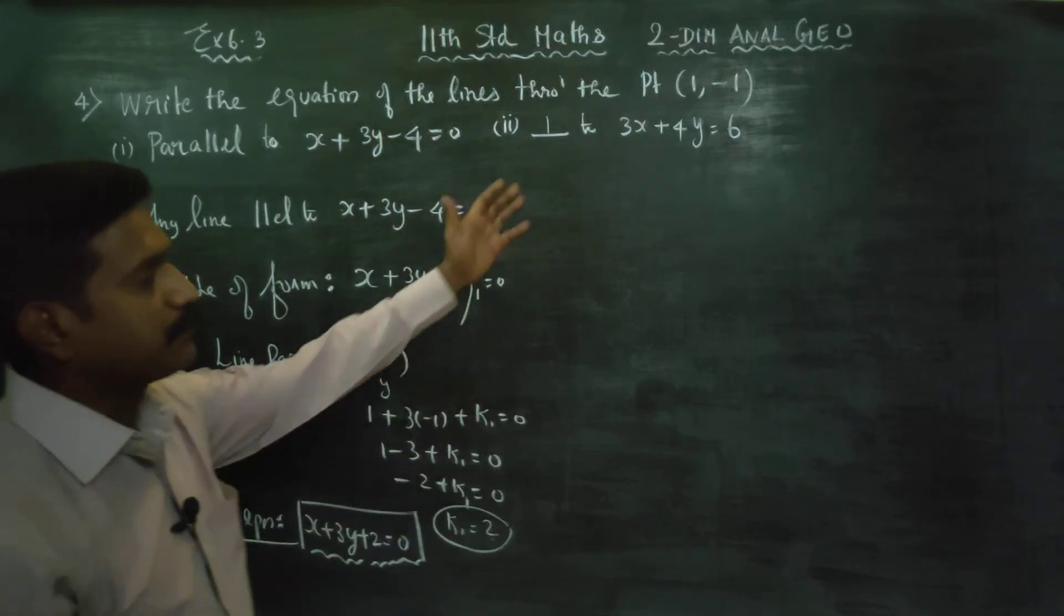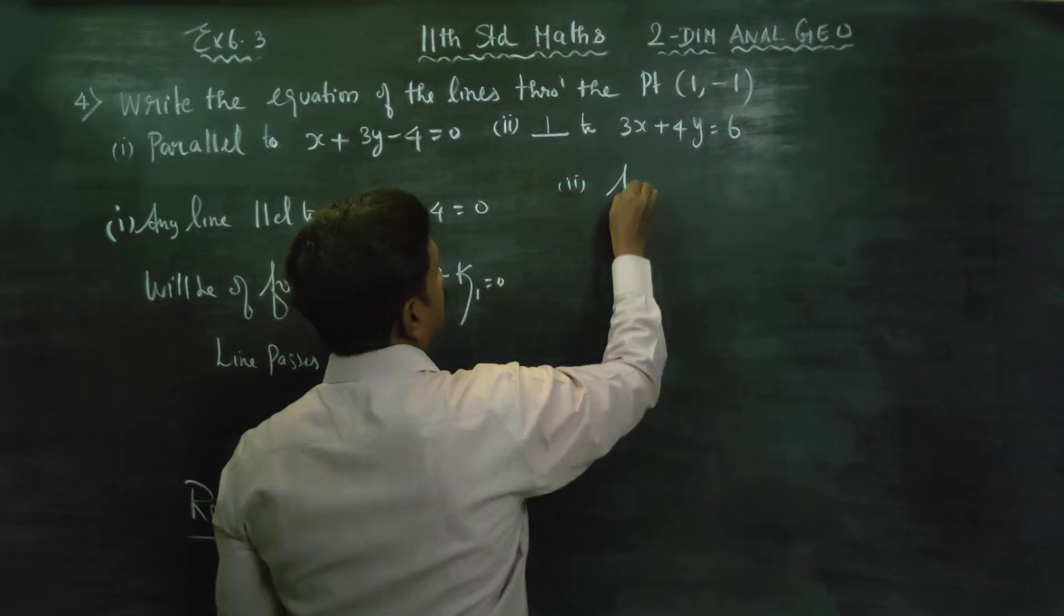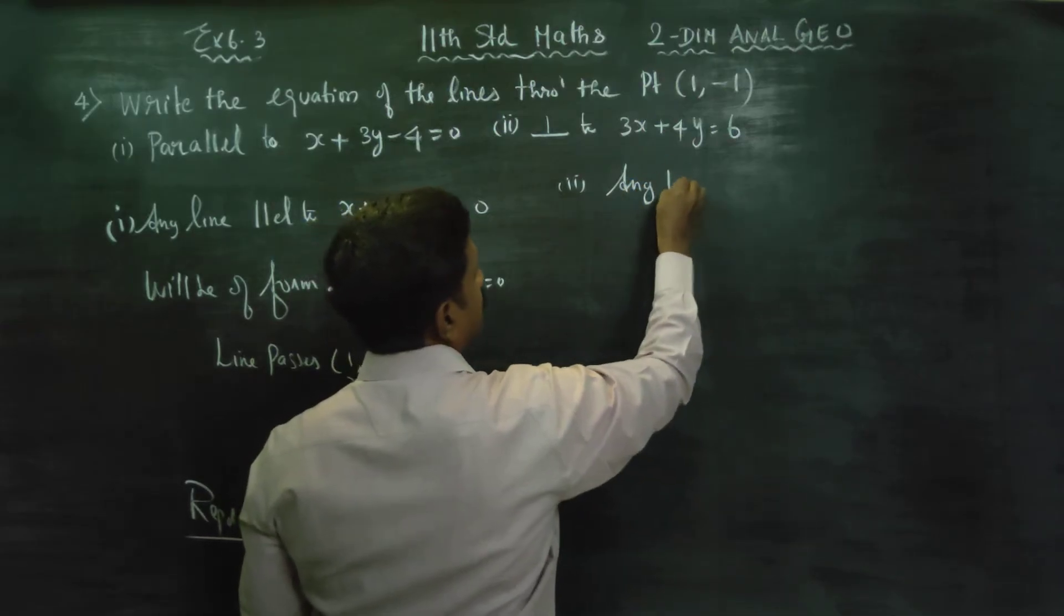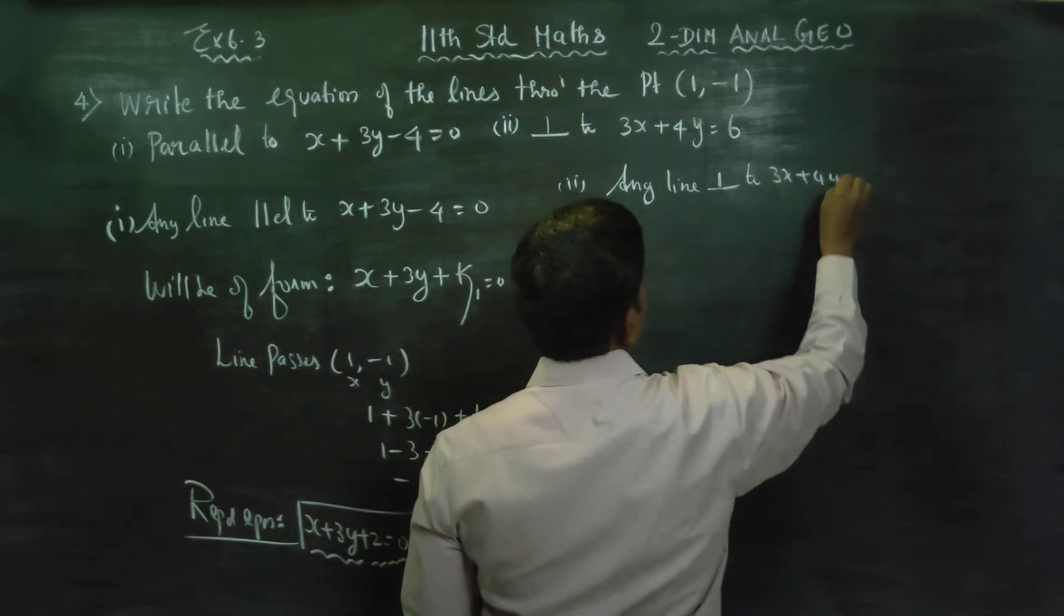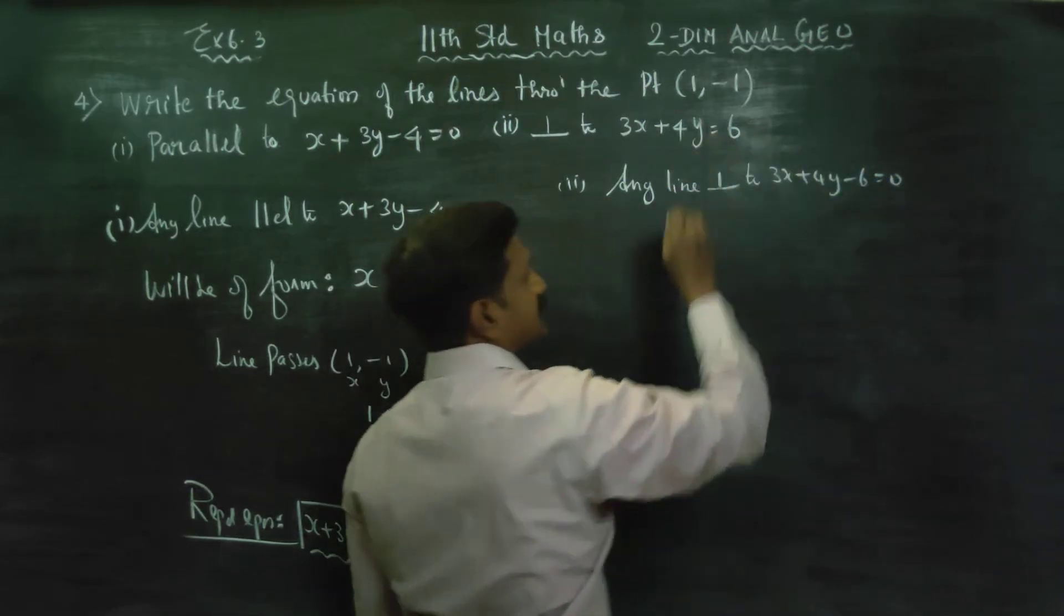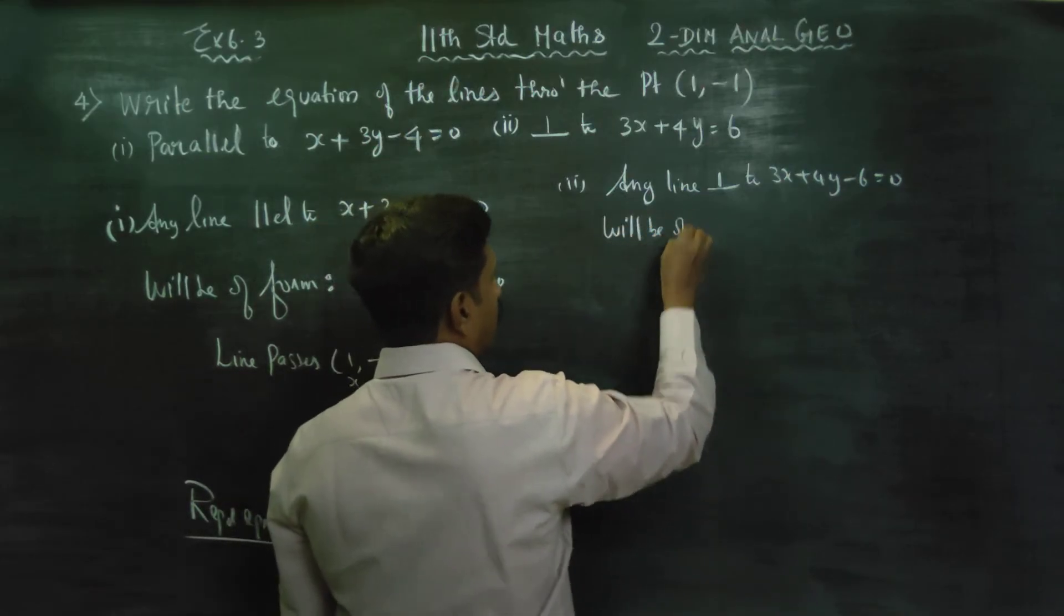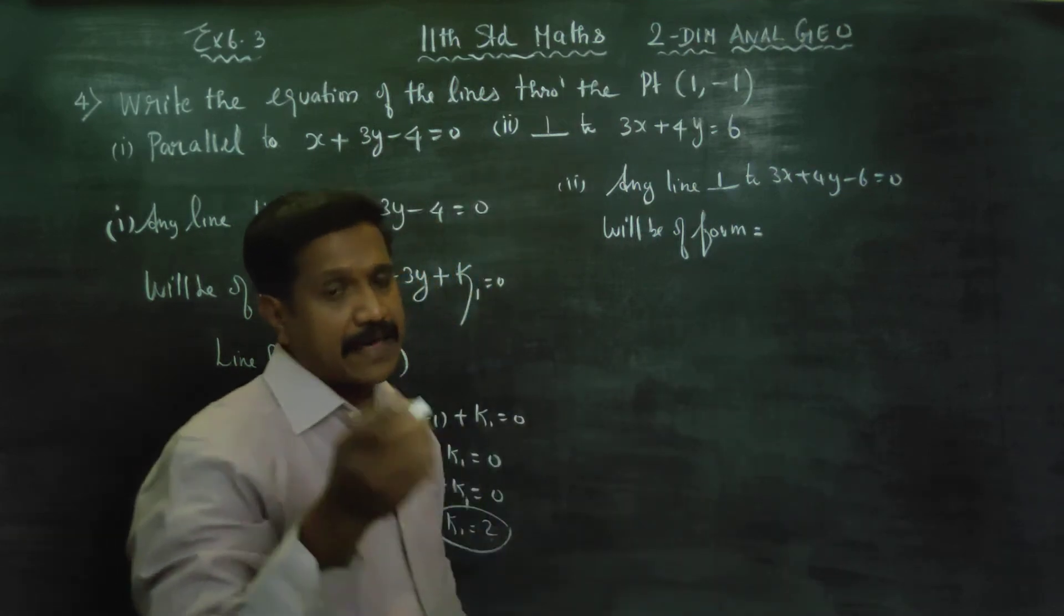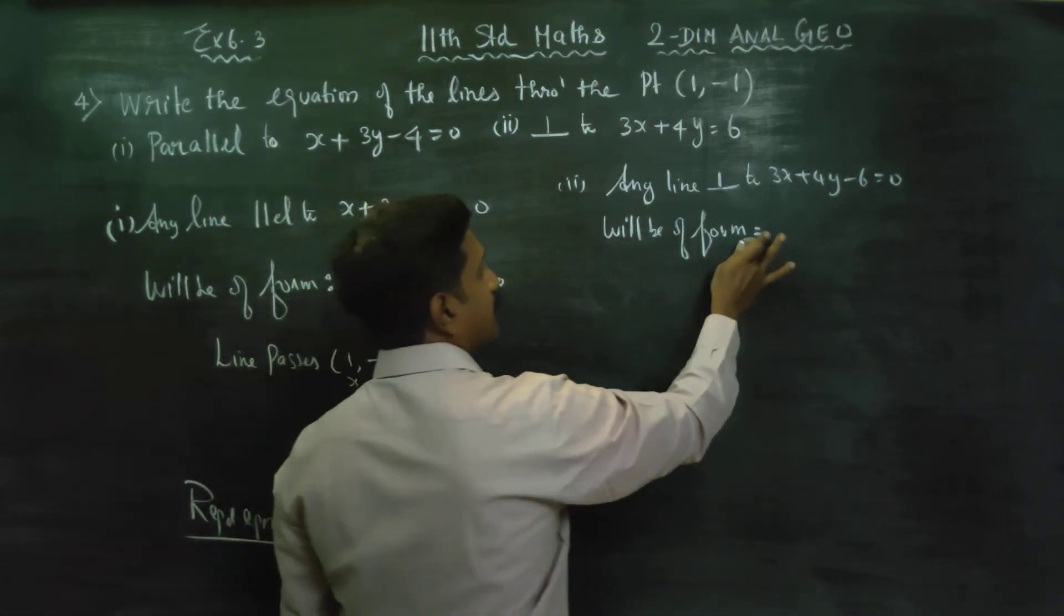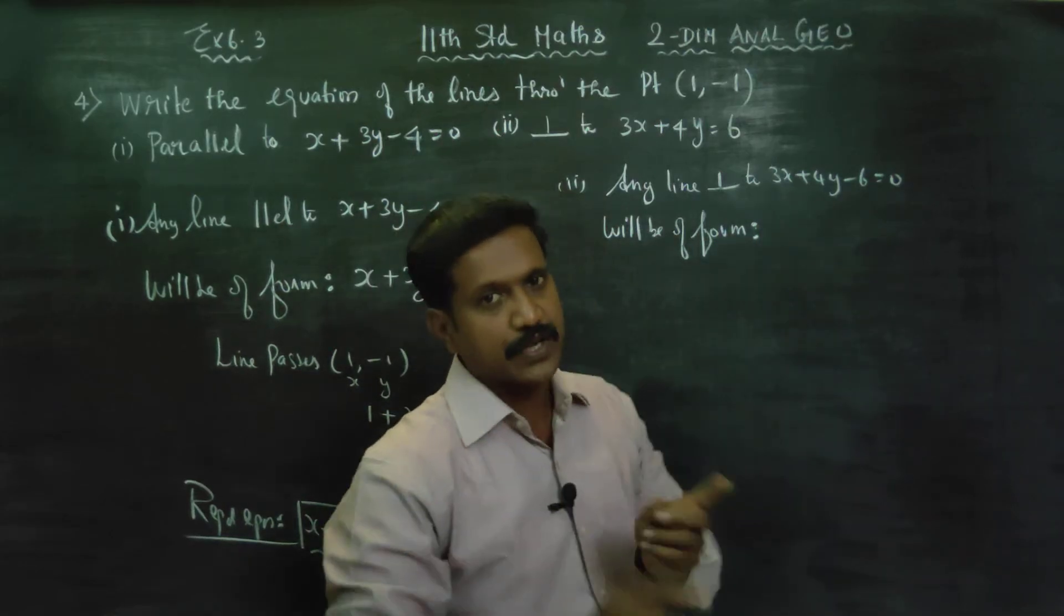After finishing perpendicular number 2: any line perpendicular to 3x plus 4y minus 6 equals 0 will be of this form. Parallel has the same x coefficient and same y coefficient. Perpendicular has the coefficients switched.